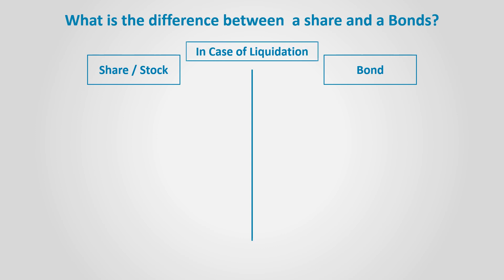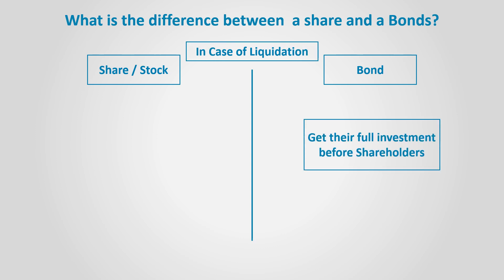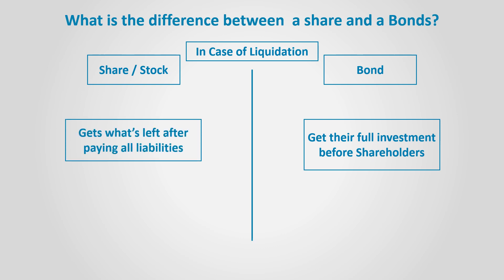In case of liquidation, bond holders get their full amount first before shareholders, since they are regarded as part of liabilities. Shareholders get what is left after all liabilities are paid.